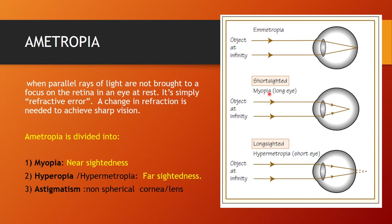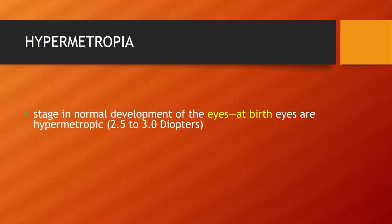In myopia the eye is larger than normal and the image is focused in front of the retina. In hypermetropia the image is focused behind the retina — the eye is shorter than normal. In comparison, the myopic eye is longer and the hypermetropic eye is shorter than the normal eye.